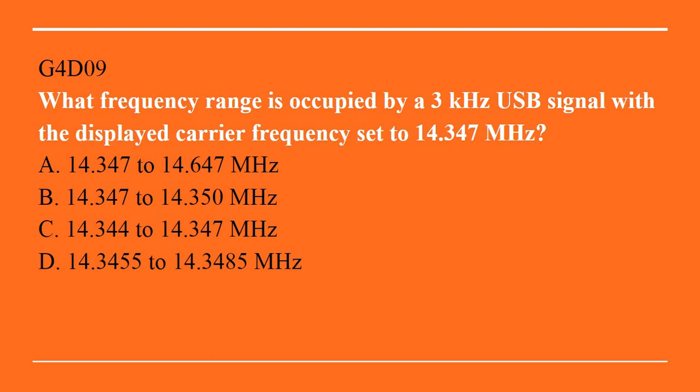G4D09: What frequency range is occupied by a 3 kHz upper sideband signal with the displayed carrier frequency set to 14.347 MHz? A. 14.347 to 14.647 MHz. B. 14.347 to 14.350 MHz. C. 14.344 to 14.347 MHz. Or D. 14.3455 to 14.3485 MHz. The correct answer is B. 14.347 to 14.350 MHz.